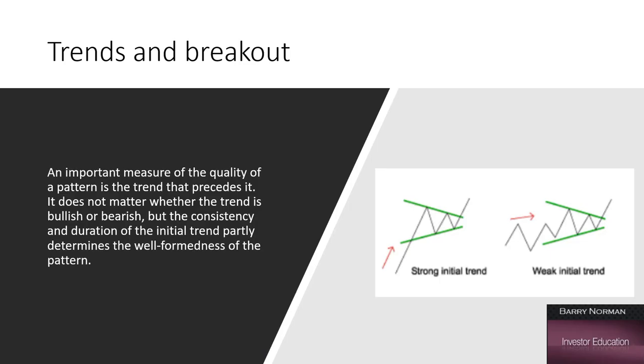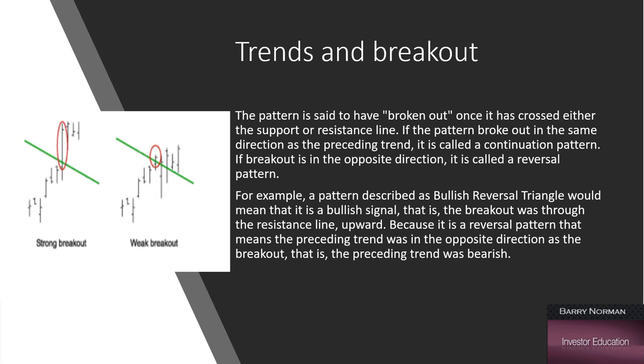But an important measure of the quality of a pattern is the trend that precedes it. It does not matter whether the trend is bullish or bearish, but the consistency and the duration of the initial trend partly determines the well-formedness of the pattern. In other words, if you get a triangle coming off of a nice uptrend or a nice downtrend, that triangle is going to be a lot more reliable. And the more well-developed, the prettier that triangle is, the more reliable it would be as a trading piece of information.